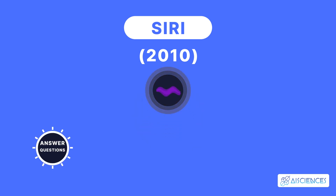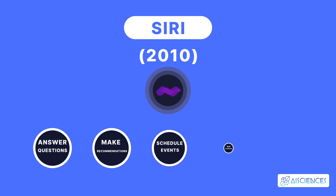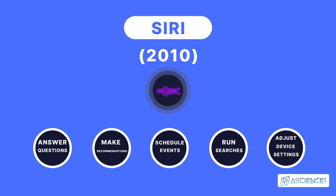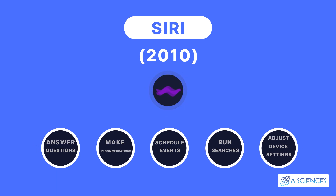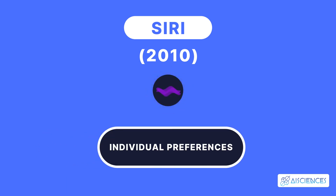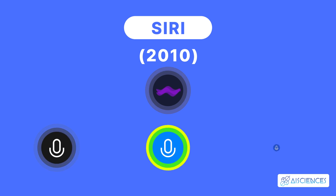Siri would answer questions, make recommendations, schedule events, run searches, and adjust device settings. And as more users interacted with Siri, this virtual assistant adapted better to their individual preferences. Amazon's similar voice interface Alexa caught up with Siri four years later, and Google Assistant and Microsoft's Cortana arrived soon after.